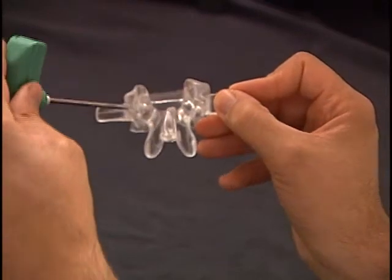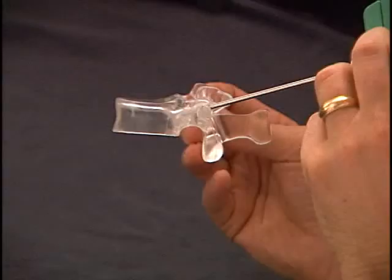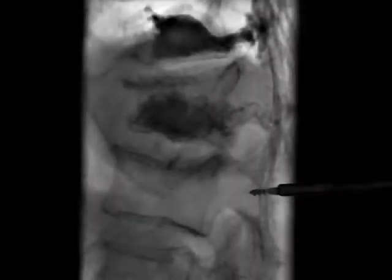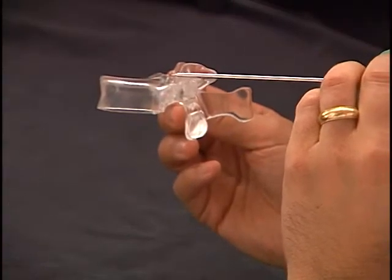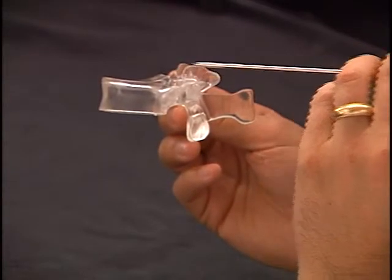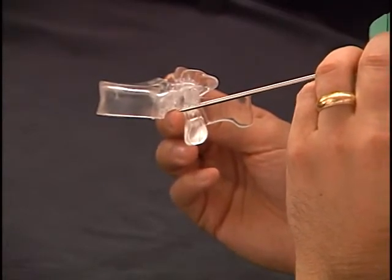Once the entry point is chosen on the AP fluoroscopic image, I lightly tap with a mallet to seat the instrument into the bone. The lateral fluoroscopic image then allows me to extrapolate the trajectory of the instrument. The appropriate trajectory should be through the upper half of the pedicle into the vertebral body. A trajectory that is too superior will result in fracture through the superior end plate, while a trajectory that is too inferior results in fracture through the inferior pedicle and nerve root injury.